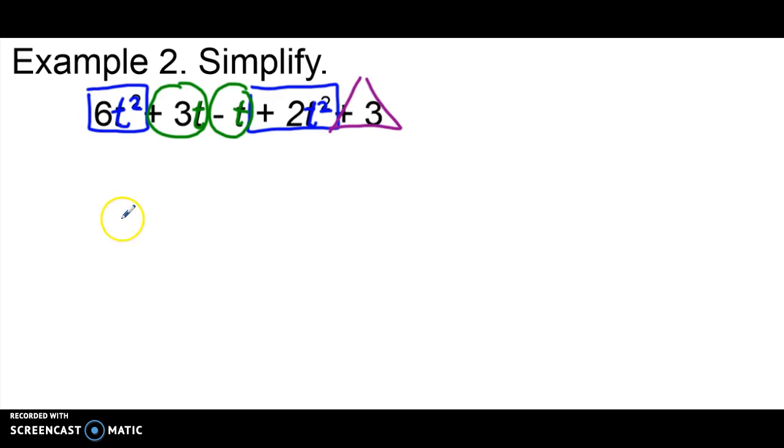So at this point what I'm going to do, I'm going to combine together any terms that are alike. So I'm going to start with my blue boxes. 6t squared plus 2t squared gives me 8t squared. Again, when we combine like terms, they keep the same variable and exponent but we add together their coefficients.